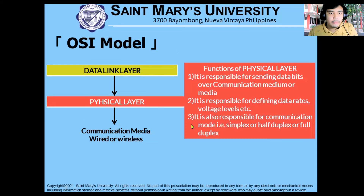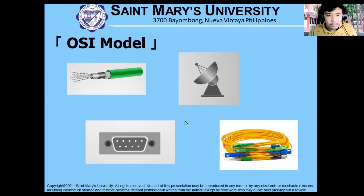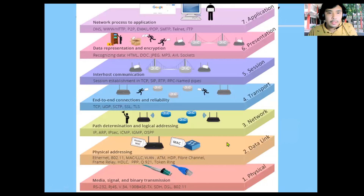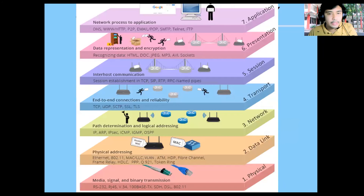Under the physical layer, we also talk about the physical wires, satellite communication, microwave, RS-232, fiber optic, etc. That covers the physical layer.